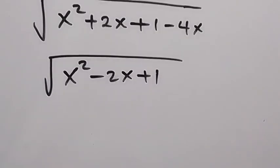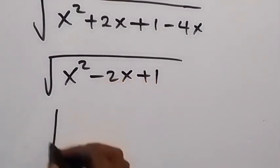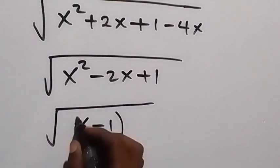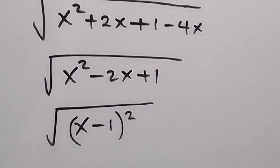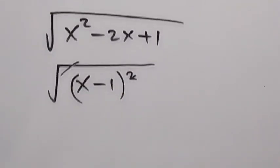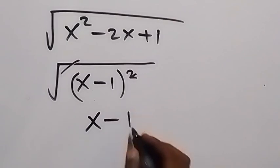And then what we have inside this root here can be written shortly as x minus 1 squared. And here, square, we cancel square root, and what we have here is simply x minus 1.